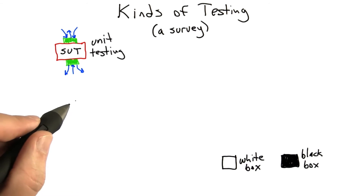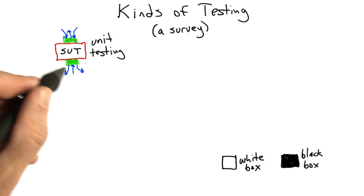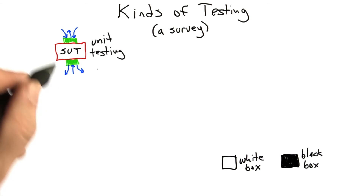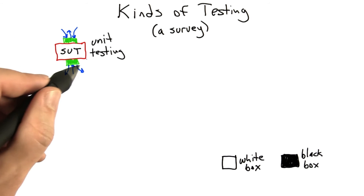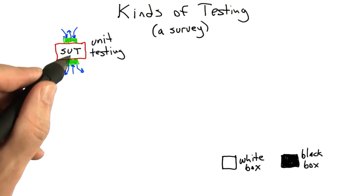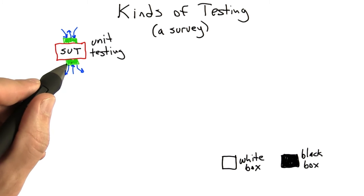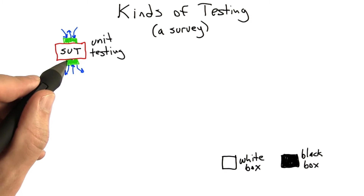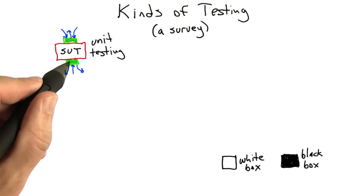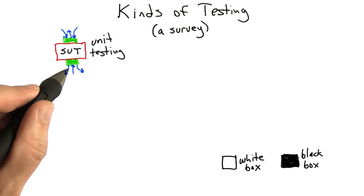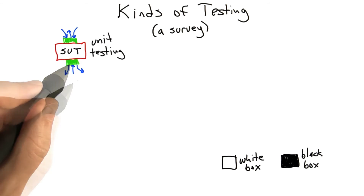The goal of unit testing is to find defects in the internal logic of the software under test as early as possible, in order to create more robust software modules that we can compose later with other modules and end up with a system that actually works.